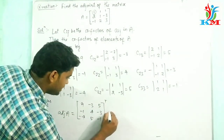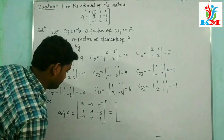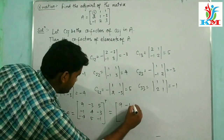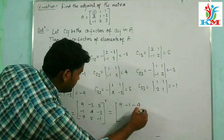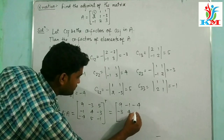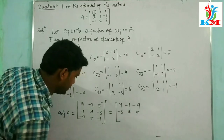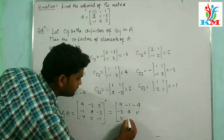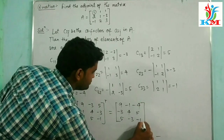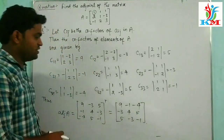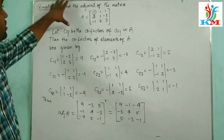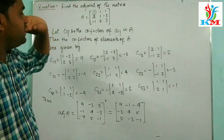That means adjoint of A is given by the transpose: [9, -1, -4; -3, 4, 5; 5, -3, -1]. So, using this process we can find the adjoint of any matrix A.